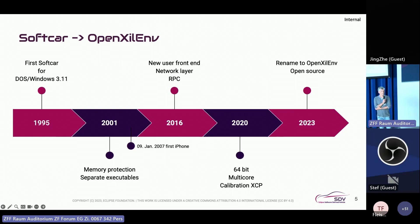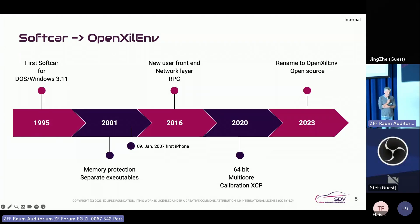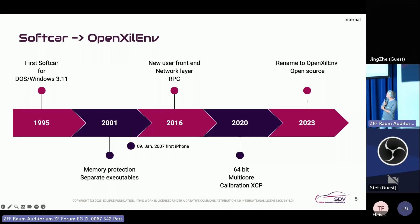In 2020 we improved our system. 64-bit targets are now allowed, also multi-core targets. Our embedded systems are becoming more and more complex — 64-bit TCUs and all the multi-core capabilities have arrived, and now we support them.